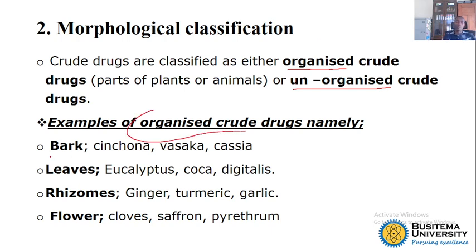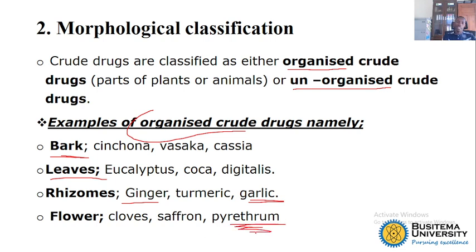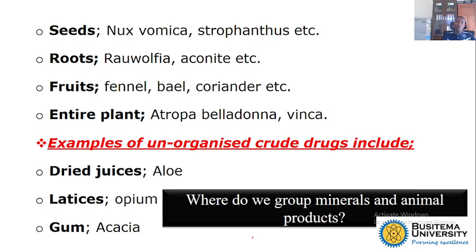For example, if you are using the bark you could say St. John's or Acacia. If you pick leaves, maybe eucalyptus — then you have picked this morphological part. We also have rhizomes, for example common garlic, which is Allium sativum, and ginger. For flowers we have an example of pyrethrum, whereby these pyrethrums are used as insecticides. For seeds we have Nux vomica. Sometimes you can use the entire plant, for example Atropa belladonna. For unorganized drugs, an example is aloe vera, whereby you pick the dry juice, and opium whereby you pick the latex.